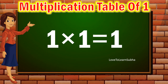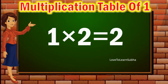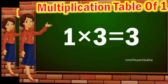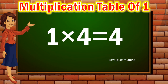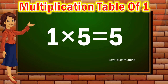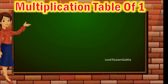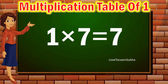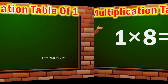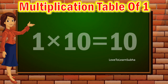1-1s are 1. 1-2s are 2. 1-3s are 3. 1-4s are 4. 1-5s are 5. 1-6s are 6. 1-7s are 7. 1-8s are 8. 1-9s are 9. 1-10s are 10.